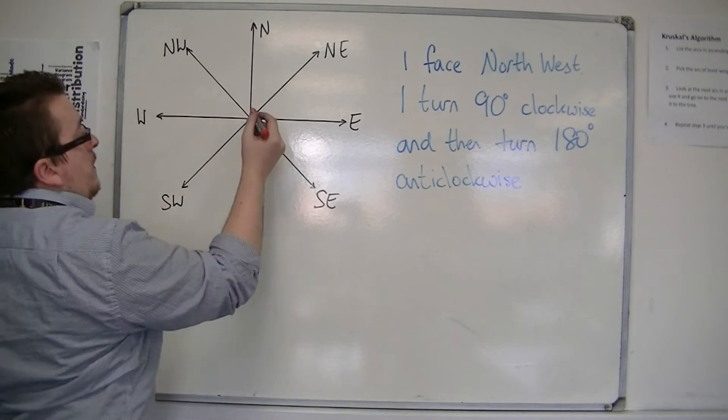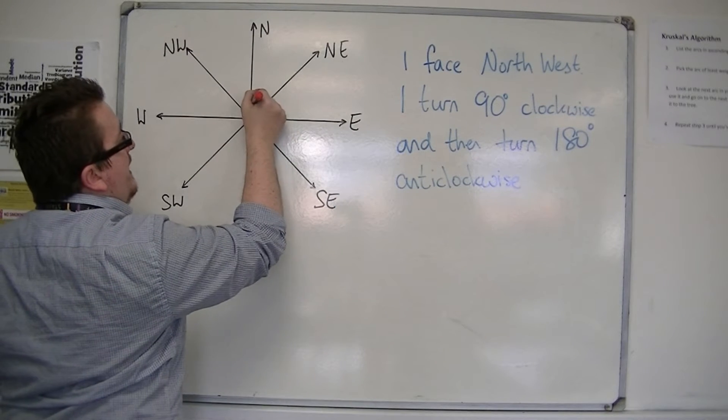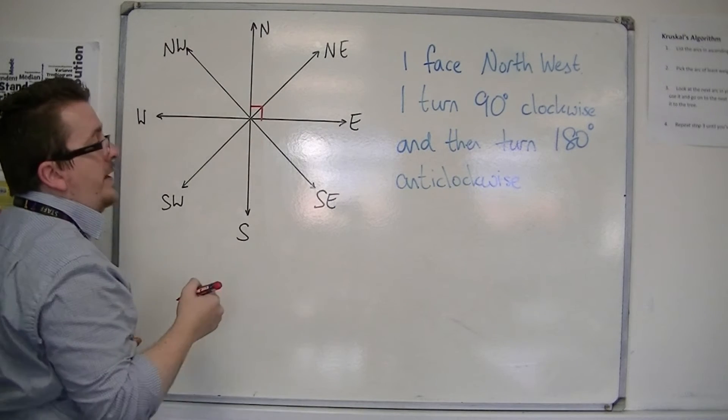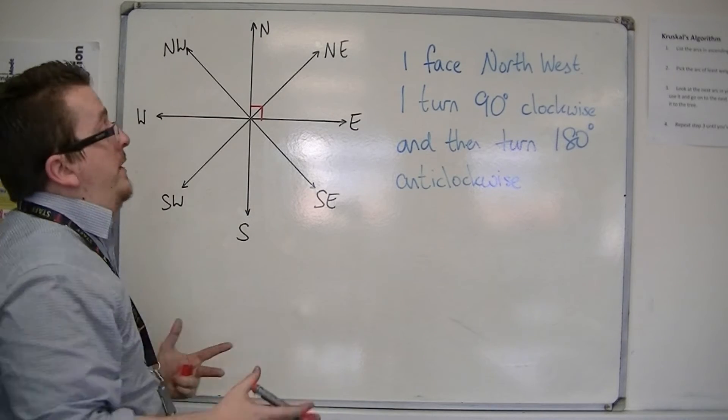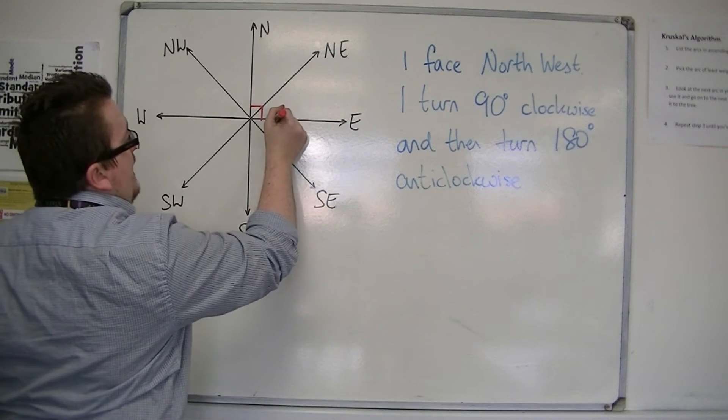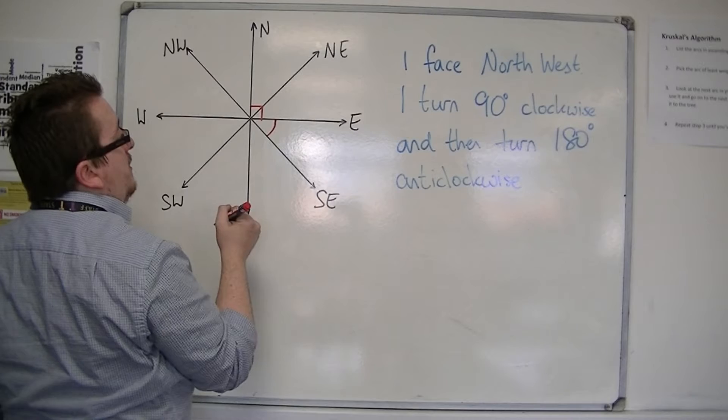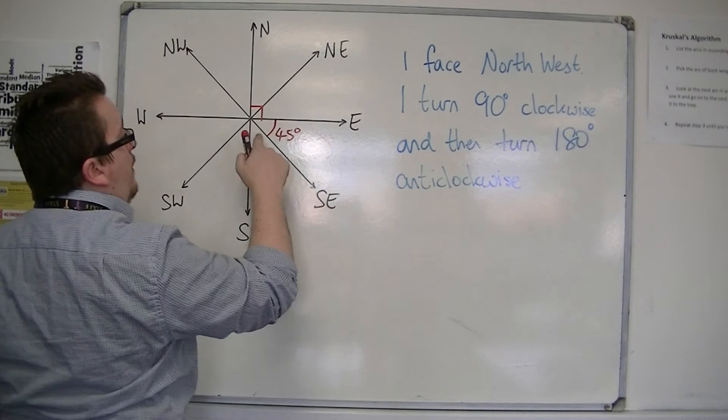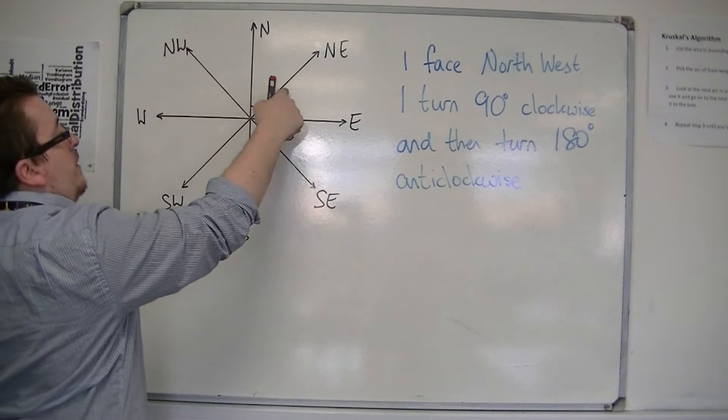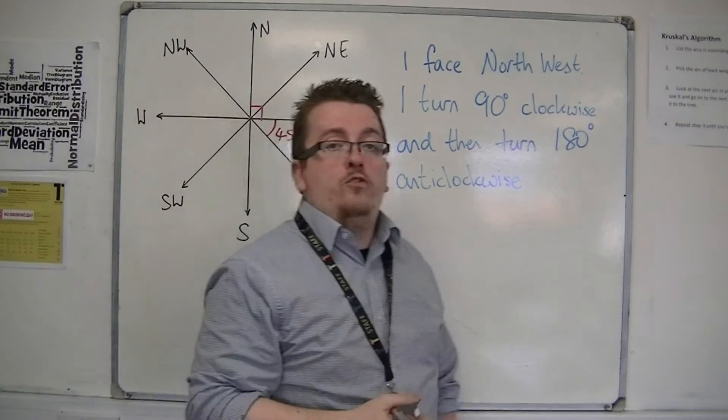So this whole direction between north and east, for example, will be a right angle, which is 90 degrees. So between east and south-east, we're going to be looking at 45 degrees. Each one of these sections represents a 45 degree angle.